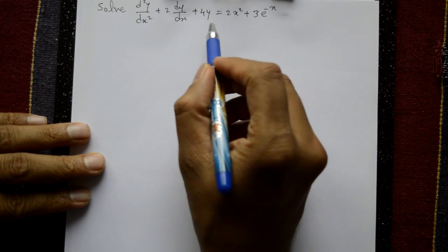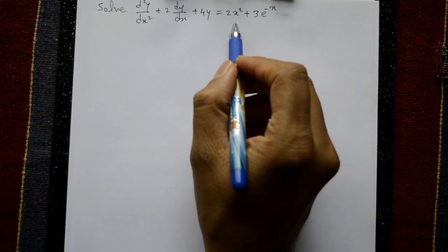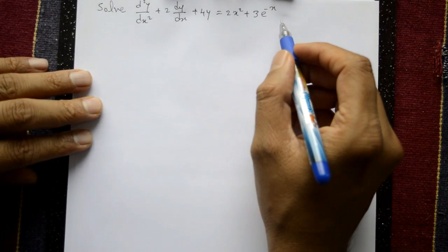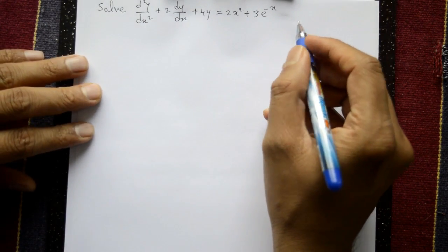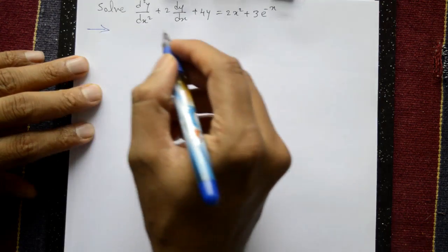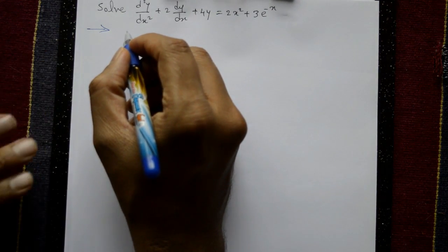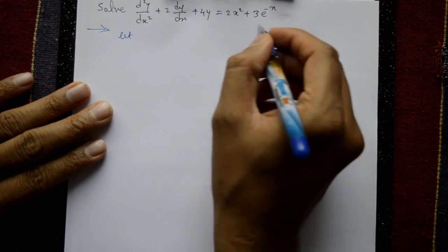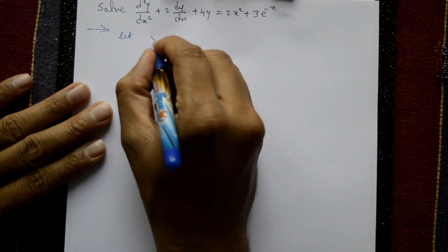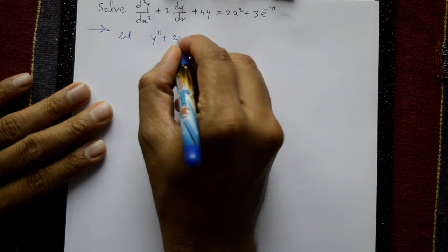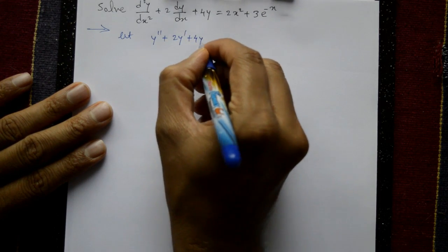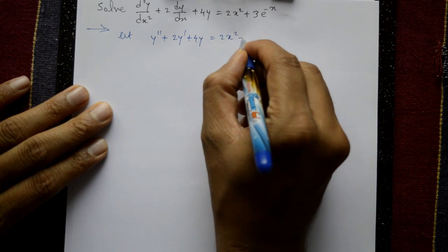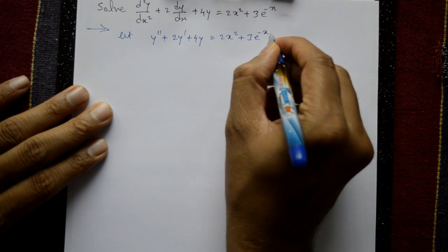Now solve d²y/dx² + 2dy/dx + 4y = 2x² + 3e^(-x) by the method of undetermined coefficients. Find the complete solution. The equation can be written as y'' + 2y' + 4y = 2x² + 3e^(-x).